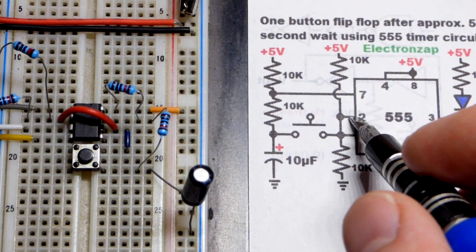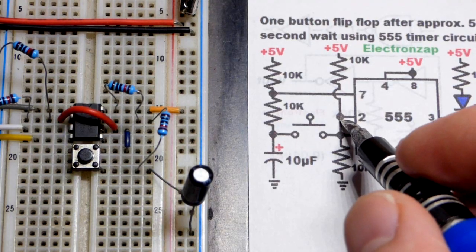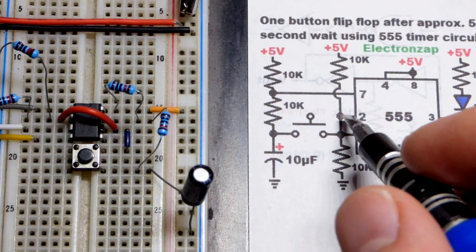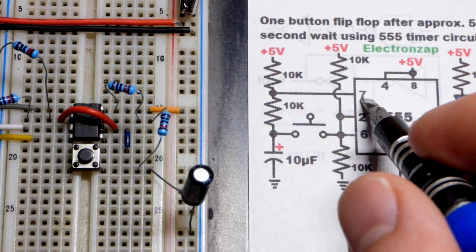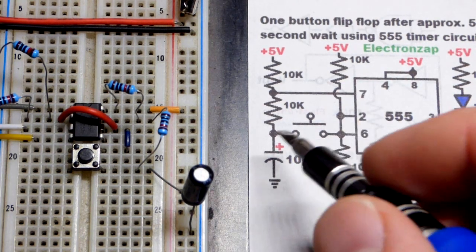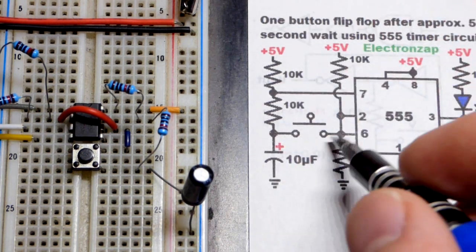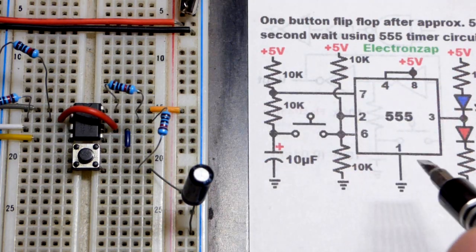But yeah, it just sees that low enough voltage. And then it sets the output high. And pin 7 stops discharging as well, so that the capacitor can charge back up. So yeah, pin 6 is waiting for two-thirds or more. And then pin 2 is waiting for less than one-third.